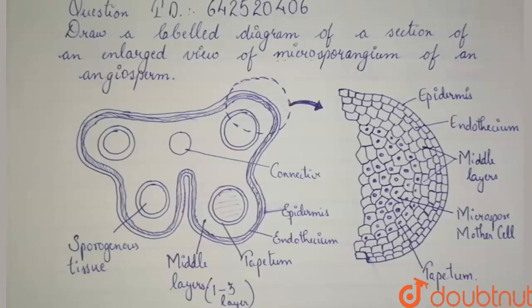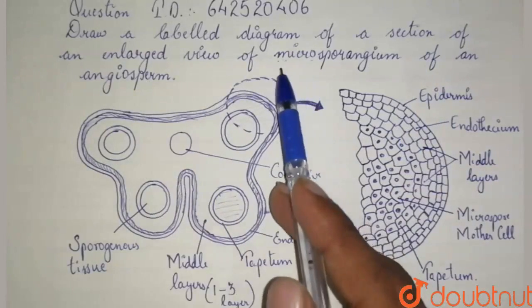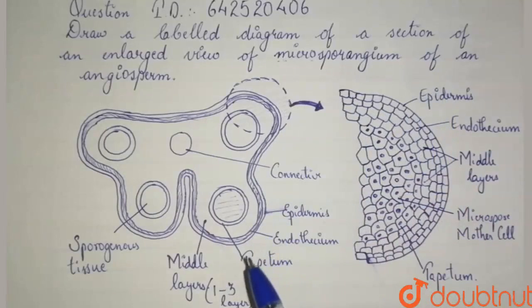In this question, we are asked to draw a labeled diagram of a section of an enlarged view of microsporangium of an angiosperm.